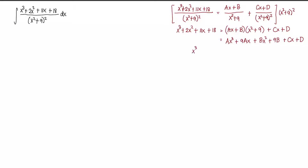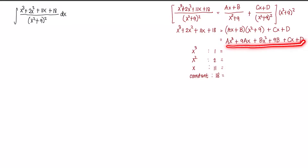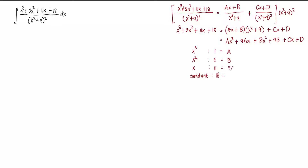We equate the coefficients of x³, x², x, and the constant. On the left: x³ has coefficient 1, x² has 2, x has 11, and the constant is 18. On the right: the x³ coefficient is A, the x² coefficient is B, the x coefficient is 9A + C, and the constant is 9B + D.